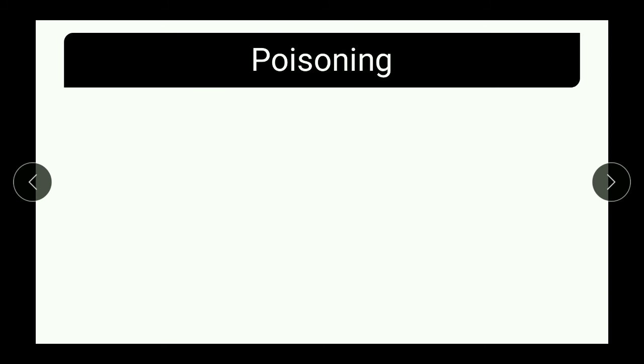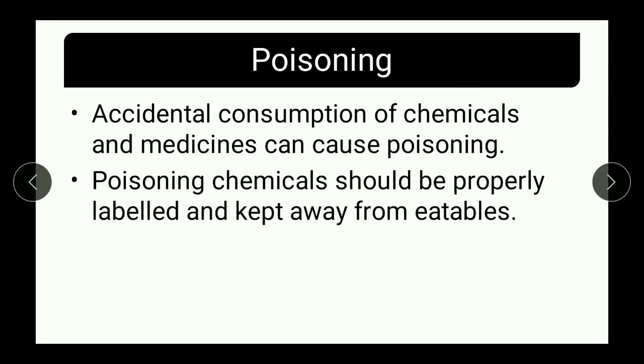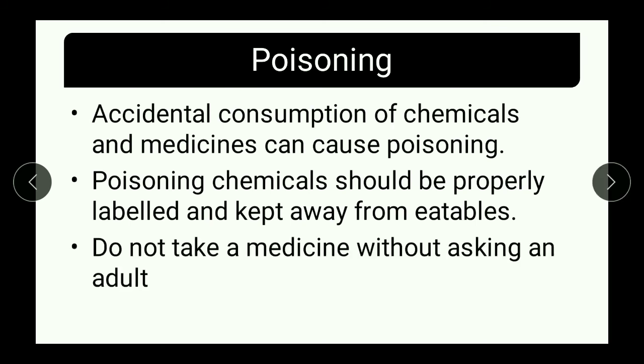Poisoning happens many times because of harmful chemicals or strong medicines. Accidental consumption of chemicals and medicines can cause poisoning. Chemicals should be properly labeled and kept away from eatables — that is, away from food. Do not take medicine without asking an adult; without a prescription from a doctor or consultation from elders, we should not take any medicine.